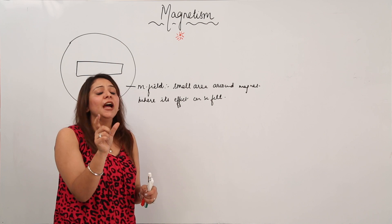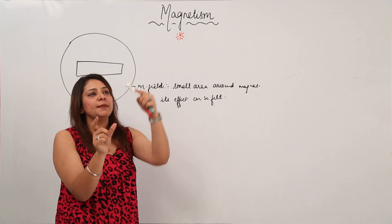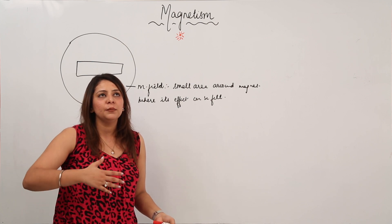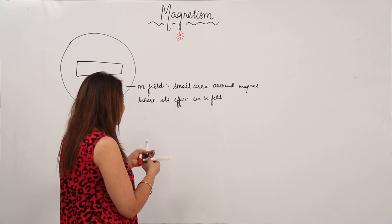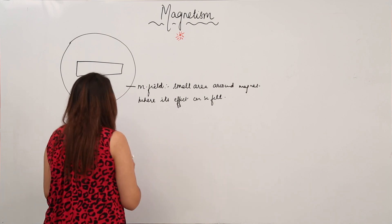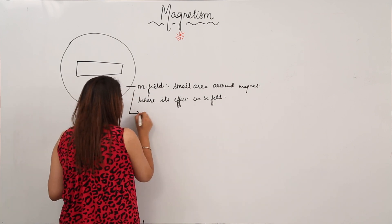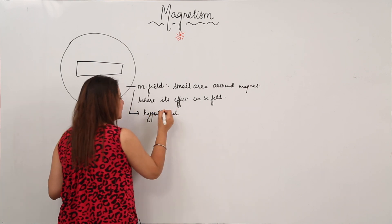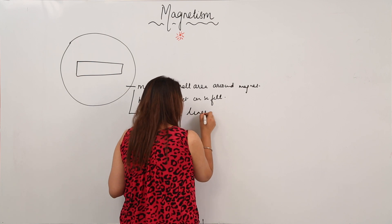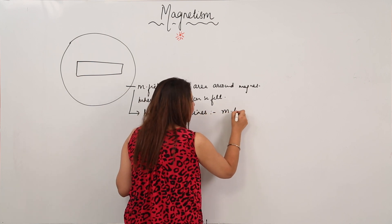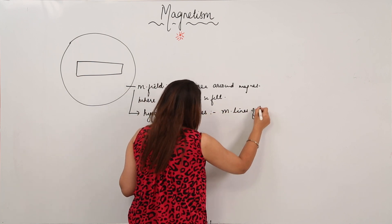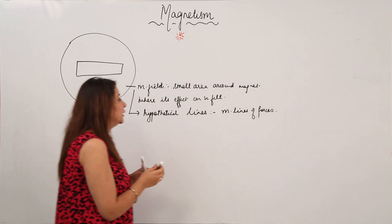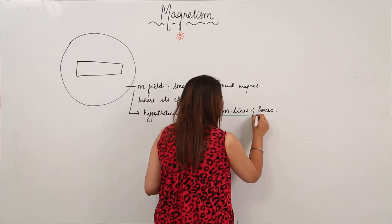Since we cannot see the magnetic field, in order to understand and study it, we consider hypothetical lines called magnetic lines of forces. We just consider these lines in order to understand the magnetic field properly.